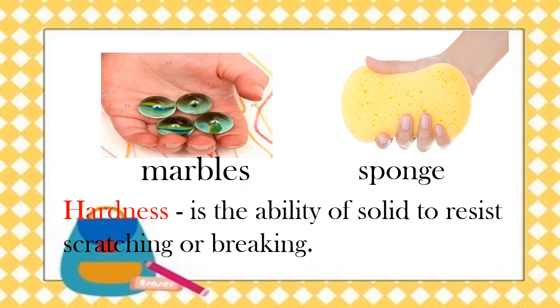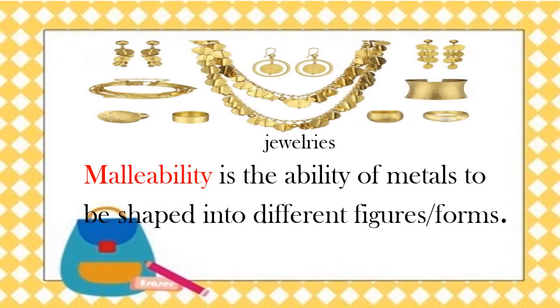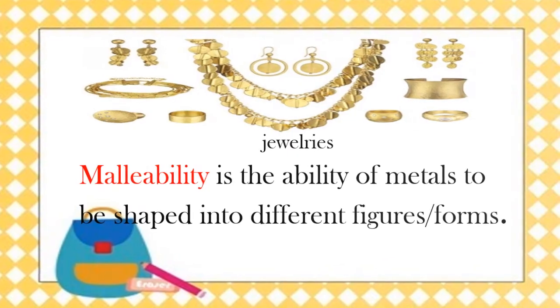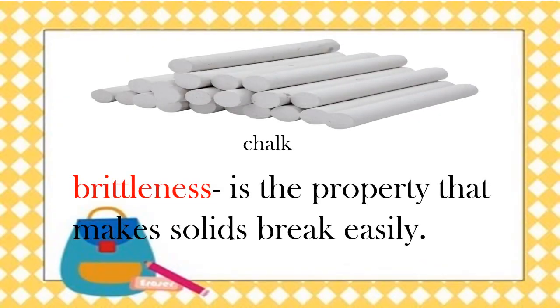Some solids are hard while others are soft. Hardness is the ability of solids to resist scratching or breaking. Some solids such as metals have unique properties. Gold and silver jewellery have different shapes. Jewellers can form beautiful shapes from these metals because they are malleable. Malleability is the ability of metals to be shaped into different figures or forms. Electrical wires are made of copper. Copper has many forms and can be formed into stripes, shavings, or wires. This property of copper is called ductility. Brittleness is the property that makes solids break easily.